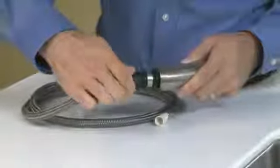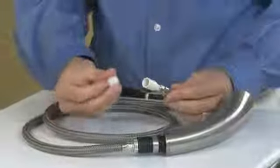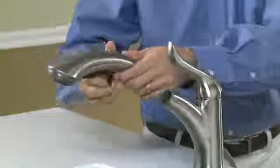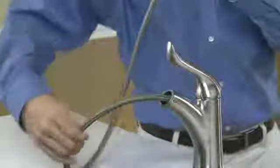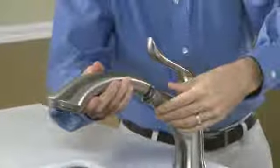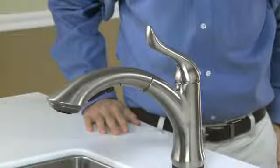Then, insert the plastic hose guide onto the end of the hose. Feed the hose through the spout until the spray wand docks into place. Even though the hose guide helps to keep the hose from getting hung up inside the spout, it may take you a few tries to feed the hose through.